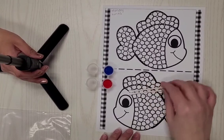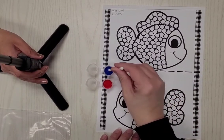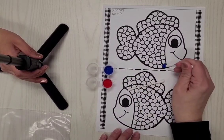In your bag you have q-tips to use with the paint. You can make dots with the paint. You'll take your q-tip and dip it in the paint and then fill in the bubbles.